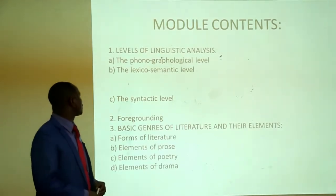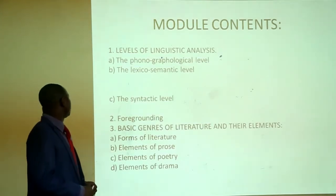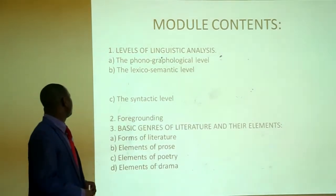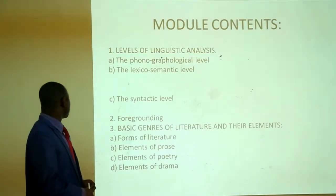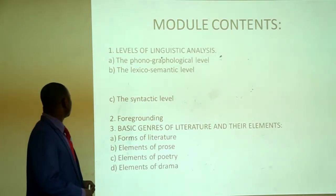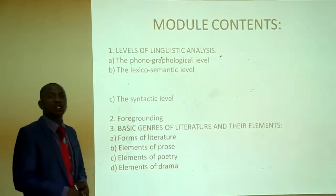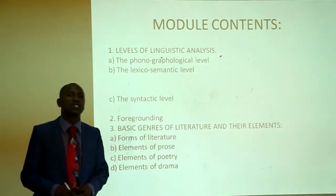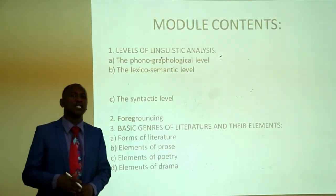These are the contents of module number 5. We shall look at the levels of linguistic analysis, through which we shall see the phonographological level, the lexical semantic level, and the syntactic level. Then we shall look at the aspect of foregrounding in a text, and lastly the basic genres of literature and their elements — the forms of literature, the elements of prose, the elements of poetry, and the elements of drama.